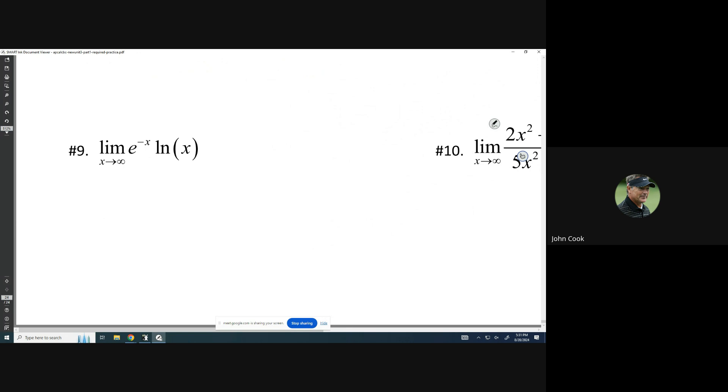All right, so e to the negative x times the natural log of x. Let's see what happens if we evaluate this at infinity. I would get e to the negative infinity, which is the same thing as 1 over e to the infinity, which is 1 over infinity, which is 0.